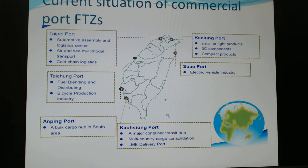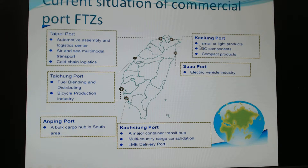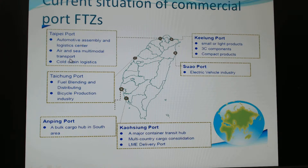You can see the FTZ locations on the map. On the east side of Taiwan, that includes Keelung and Shuang. On the west side, there is Taipei Port. Keelung Port focuses on small and light products, three-temperature compartment storage, and compact production. Taipei Port focuses on automotive — especially car parts assembly, logistics centers, air and sea multi-modal transport, and cold chain logistics.